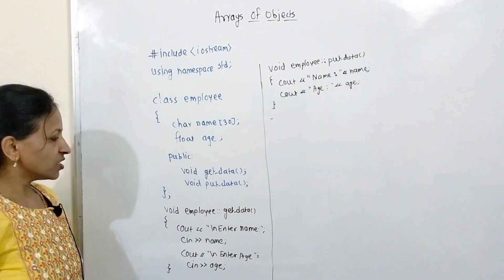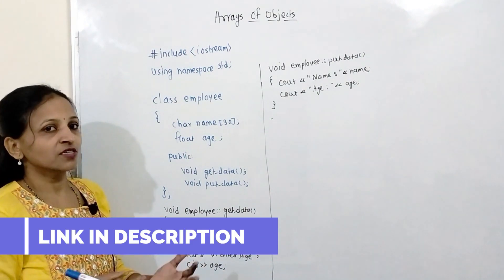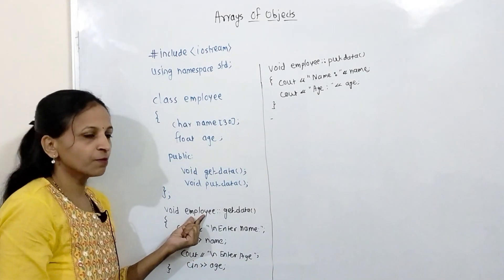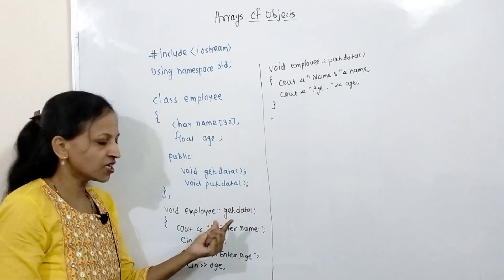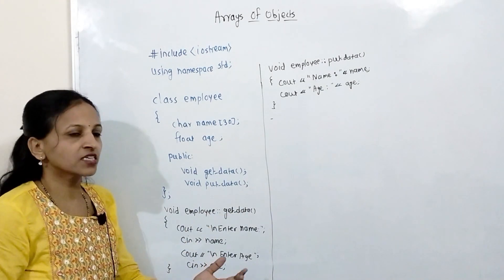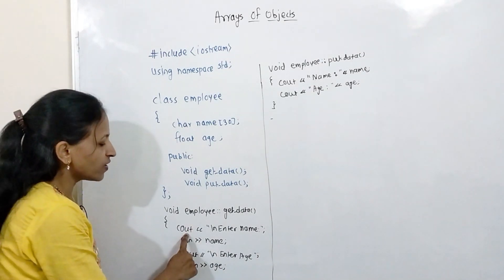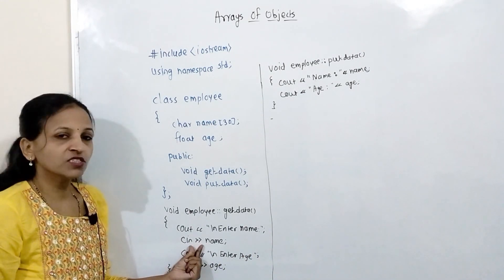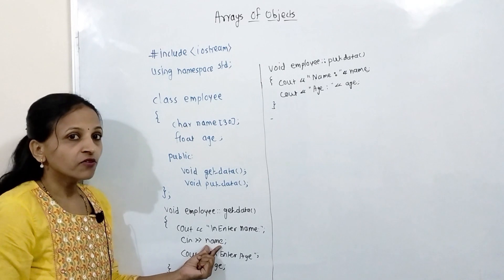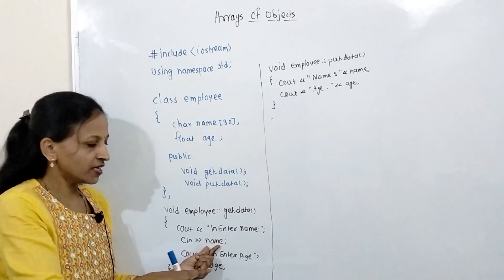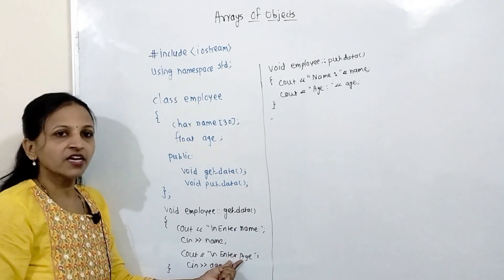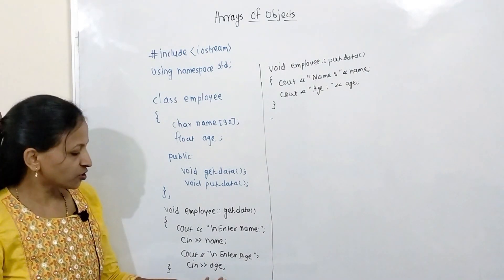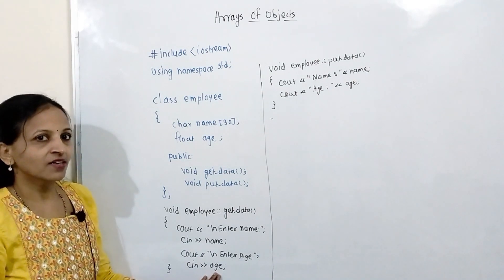The first member function is getData. To define a member function outside the class, the return type is void, then the class name Employee, scope resolution operator, and the function name getData. Inside, we accept name and age from the user. cout displays 'Enter name', and cin stores the input inside the calling object's name member. In the same way, cout displays 'Enter age' and cin stores the input inside the calling object's age member.